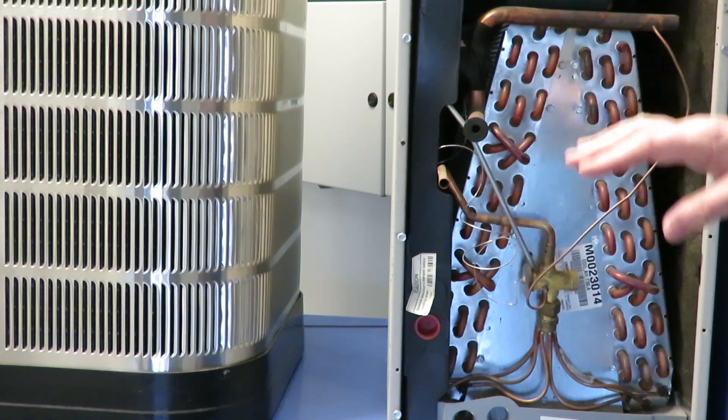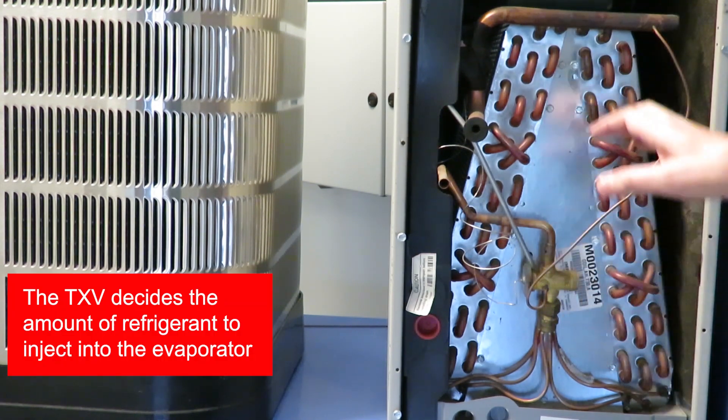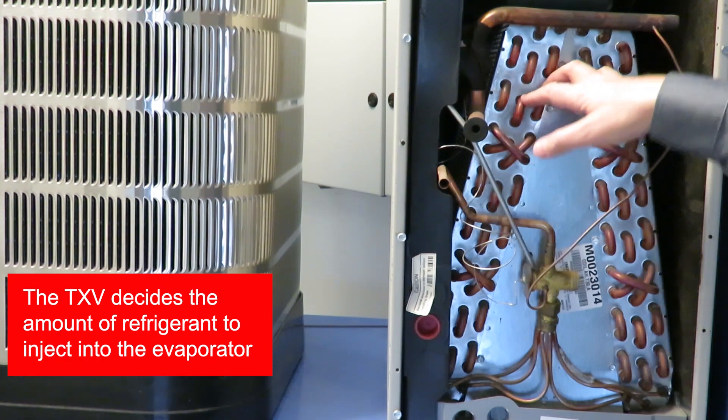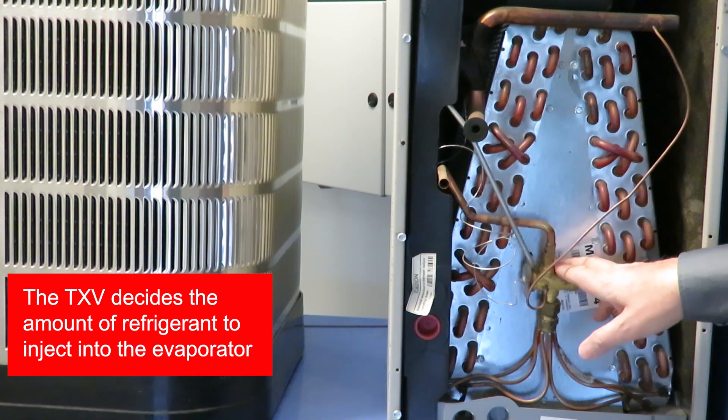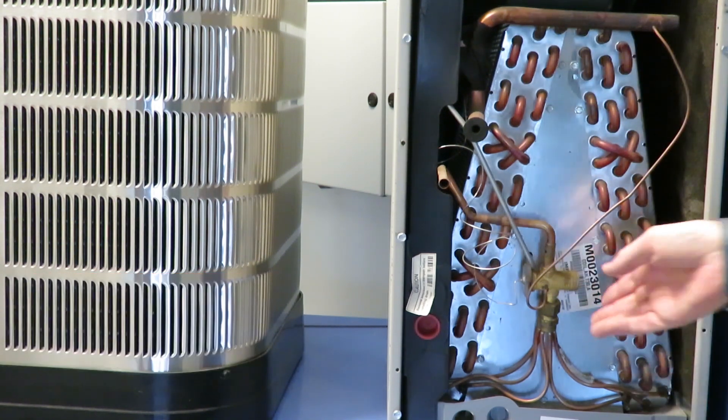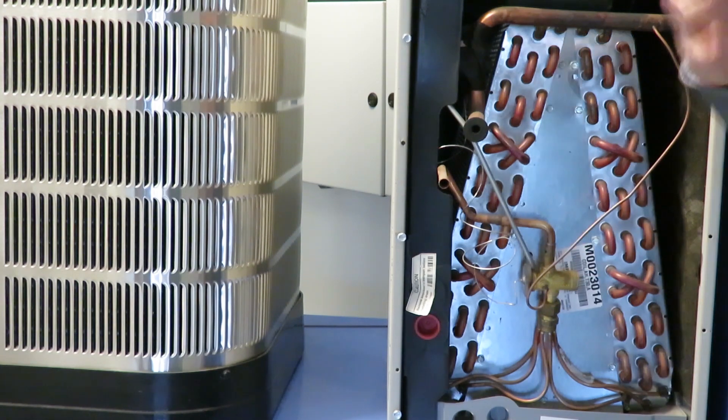The expansion valve decides how much refrigerant is needed inside the evaporator based on the need for cooling and also based on the level of temperatures that are around the unit.